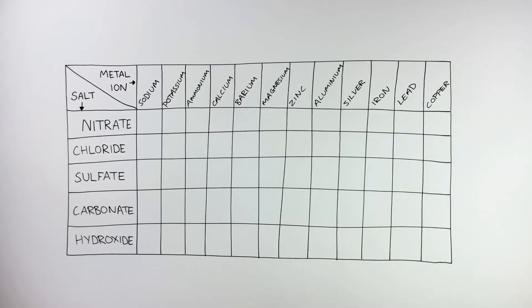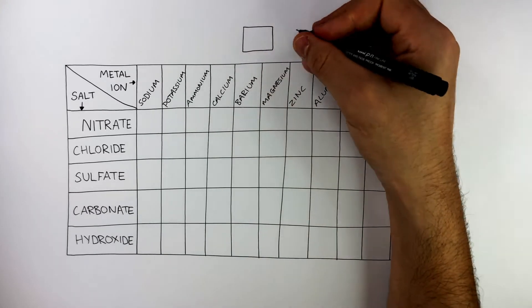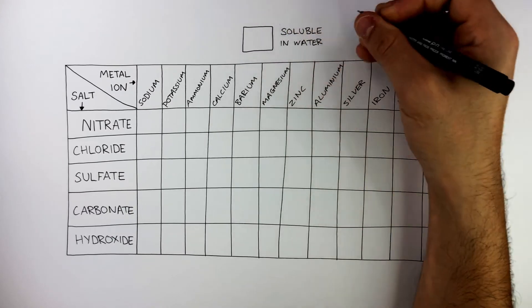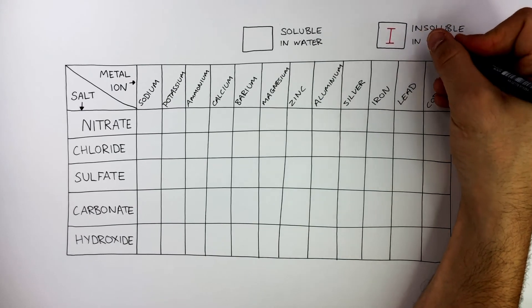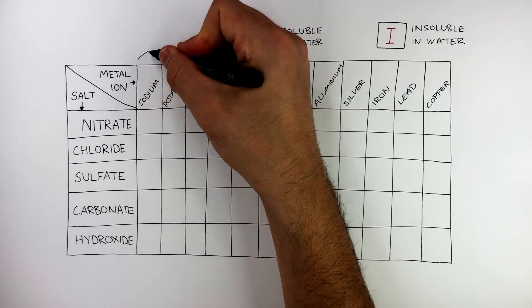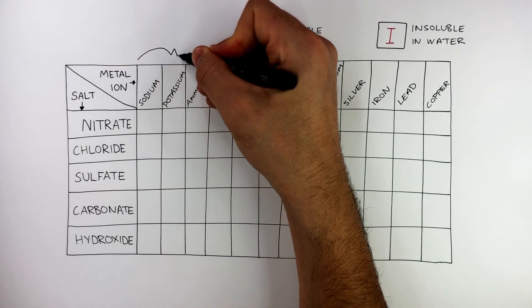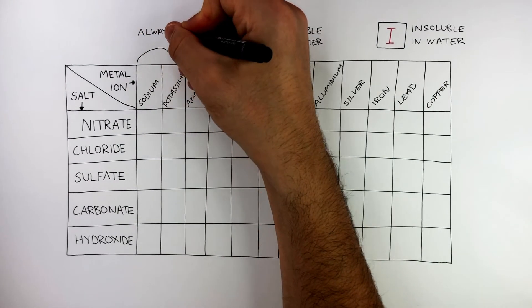We're now going to look at the solubility rules of salts in water in more detail, using this table. This key tells us how a white box means the salt is soluble in water, and if there's a box with a capital I in red, this means the salt is insoluble in water. Now all sodium, potassium and ammonium salts are always soluble in water,